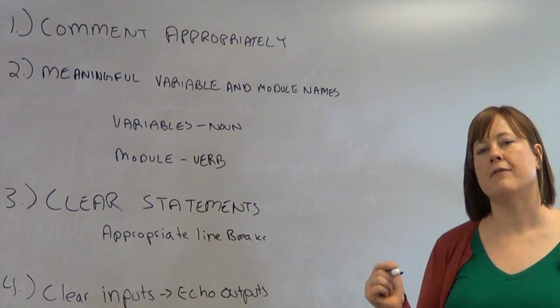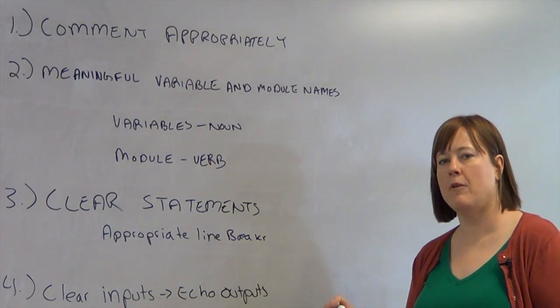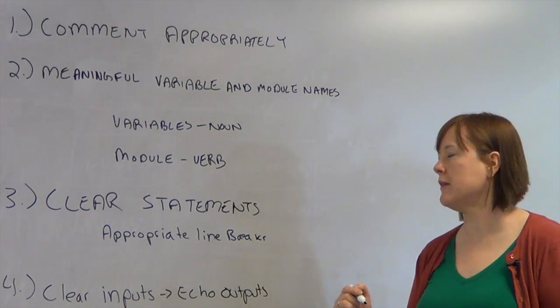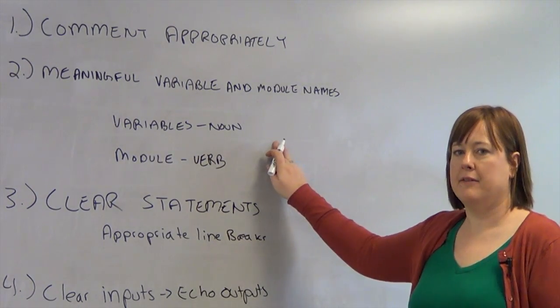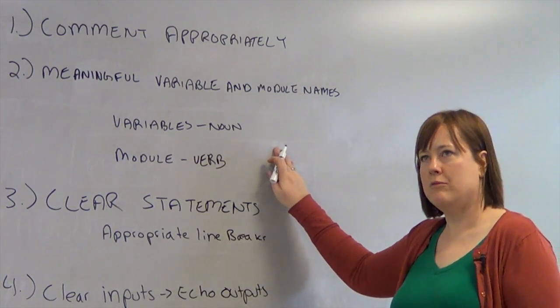You want it to be something that will be instantly clear if you read it a year from now. Type a little longer, be a little more verbose, be very clear in your names. Variables should be a noun: sales tax, total line item. They're all nouns.